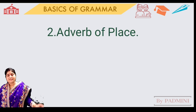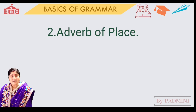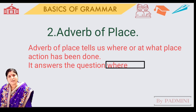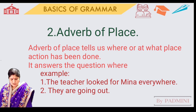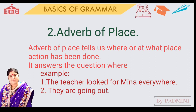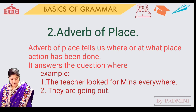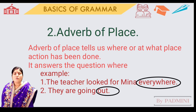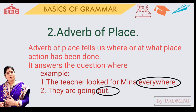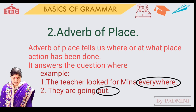Number two: adverbs of place. Adverbs of place tell us where an action has been done. The question word is 'where.' For example, 'the teacher looked for Mina everywhere.' Where did the teacher look for Mina? So everywhere tells about the place. Another example: they are going out. 'Out' is also an example of an adverb of place.